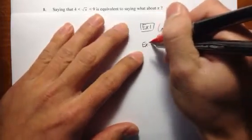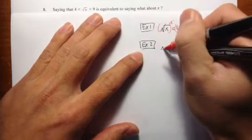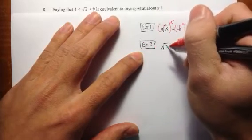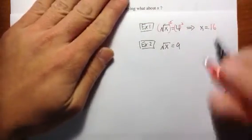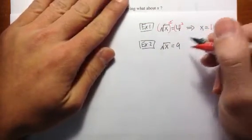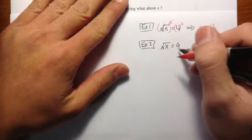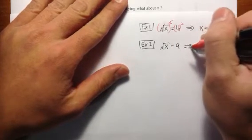Likewise, let me take a look at example number 2. When you have square root of x equals to 9, I'm not looking at the question for a minute, alright? When you have square root of x equals to 9, what can we say about x?